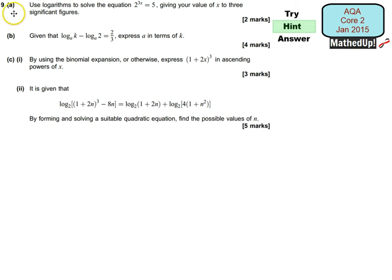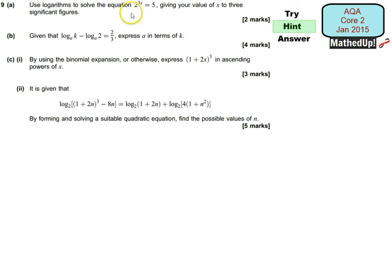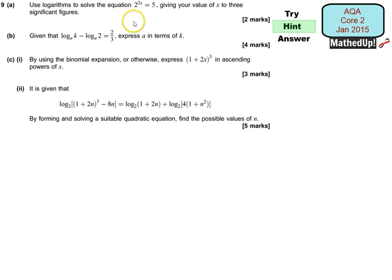For part A, we're being asked to use logarithms to solve the equation here, giving our value of x to three significant figures. Your hint for this part of the question is to try taking logarithms of both sides. Once you've done that, you should hopefully be able to isolate x and then solve what x is.